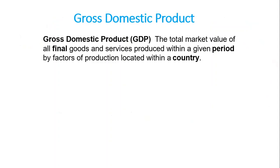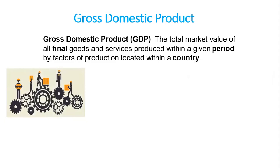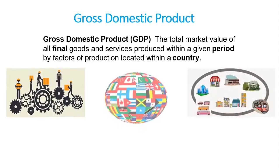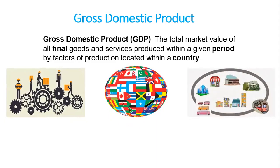Now we have the gross domestic product. Gross domestic product, GDP, is the total market value of all final goods and services produced within a given period by factors of production located within a country. Here we are interested in final goods and services — goods and services ready to be consumed — and also within a given period, usually one year.